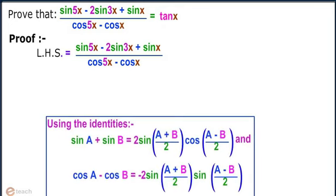Using the identities: sin A plus sin B equals 2 sin((A+B)/2) cos((A-B)/2), and cos A minus cos B equals minus 2 sin((A+B)/2) sin((A-B)/2).